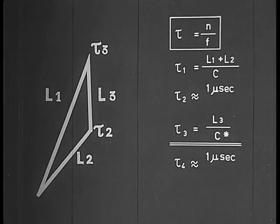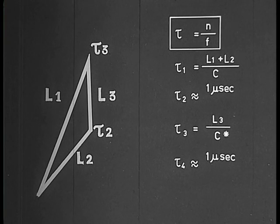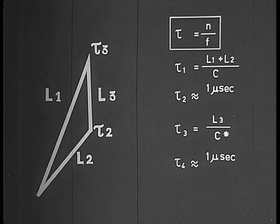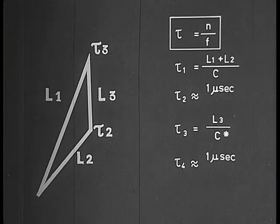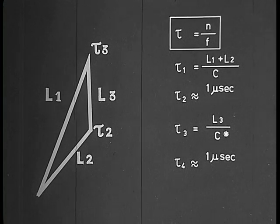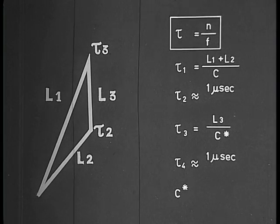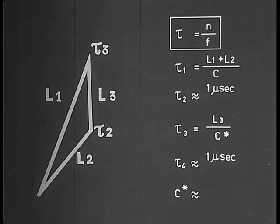Tau 3 equals L3 over C asterix. We assumed that the location of the source is independent of the location of the reflectors. It was found that the vortex moved downstream with approximately two-thirds of the sound velocity in the ambient medium. So L3 is constant and C asterix equals approximately two-third C.